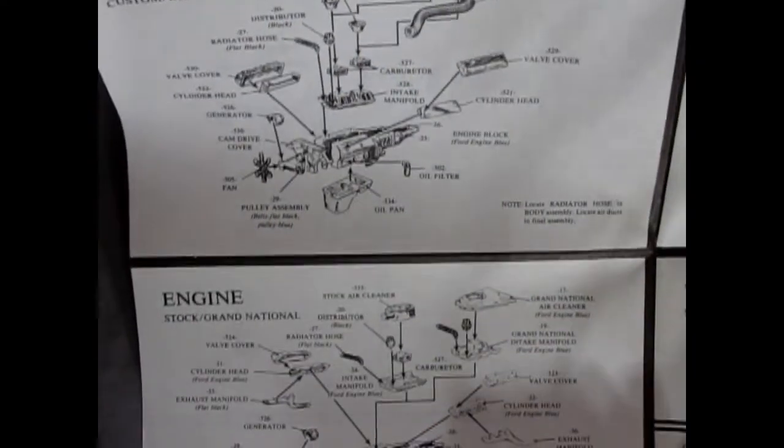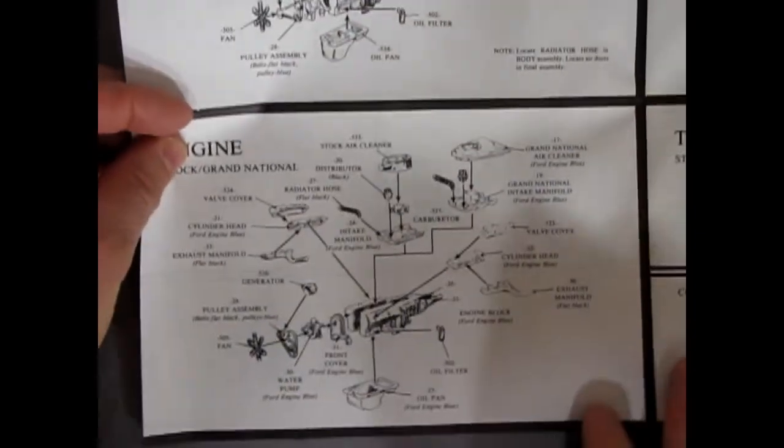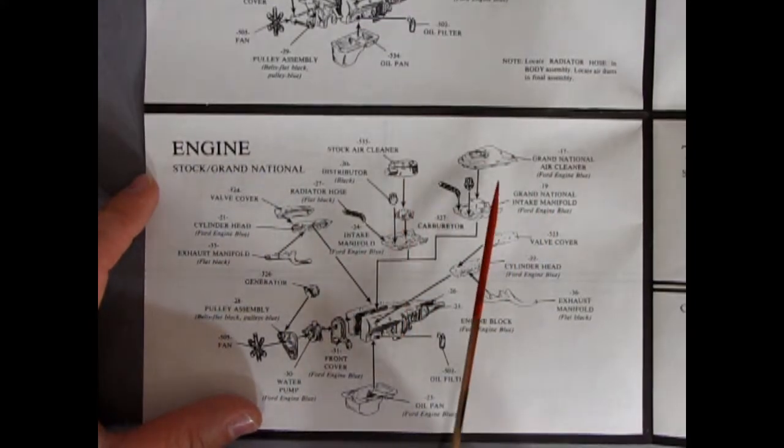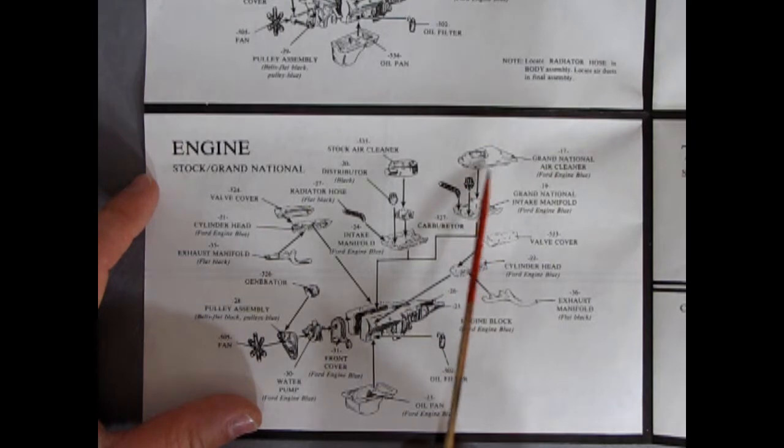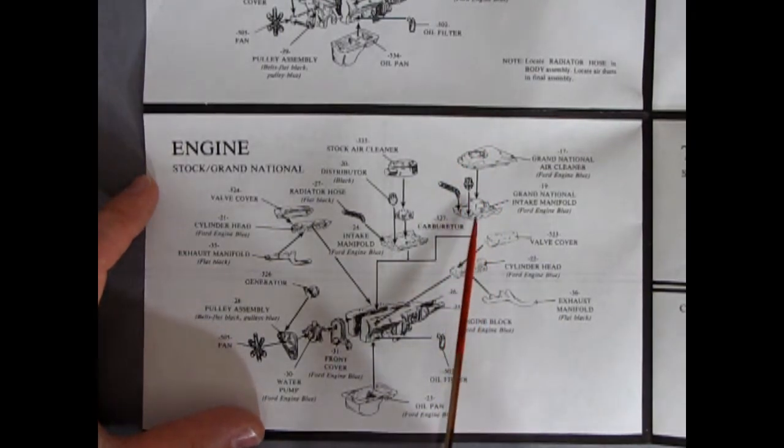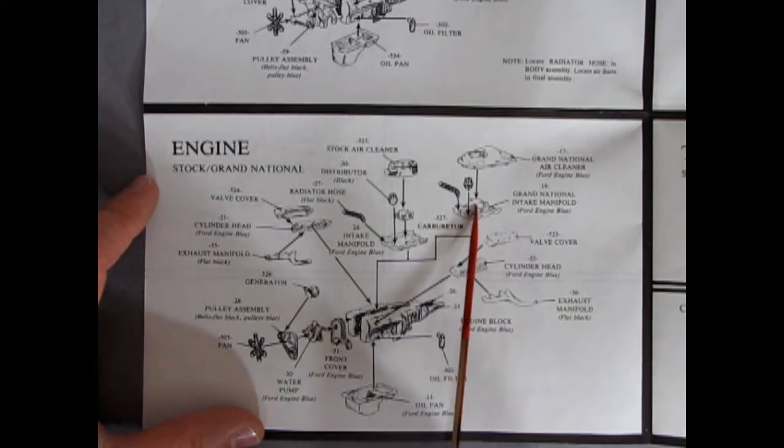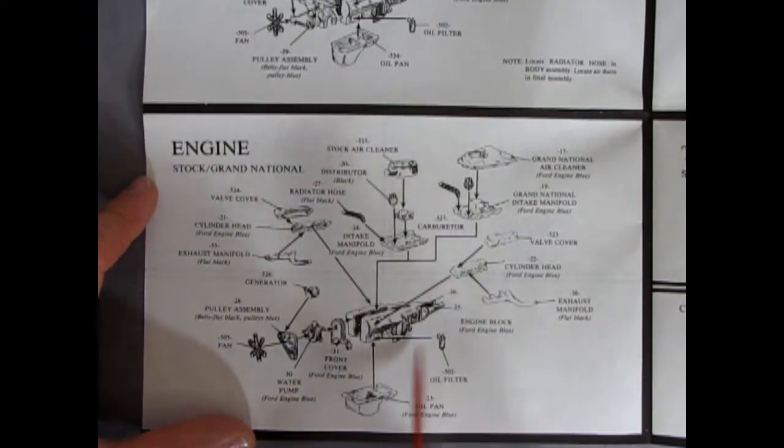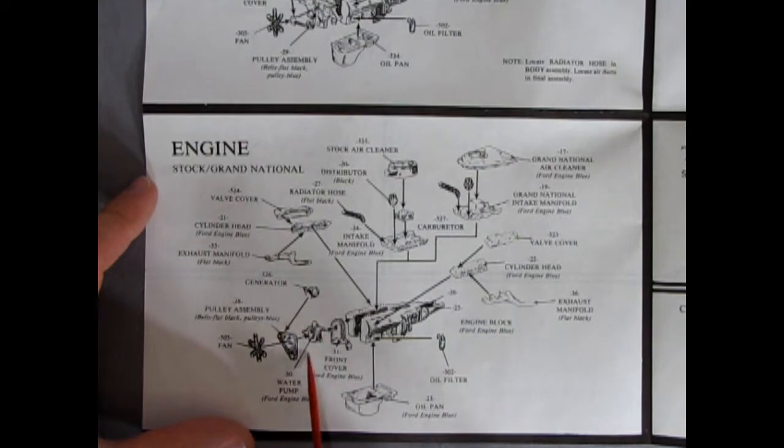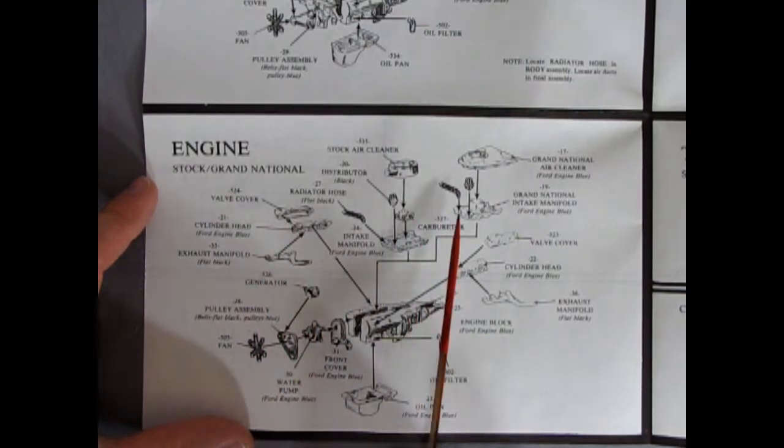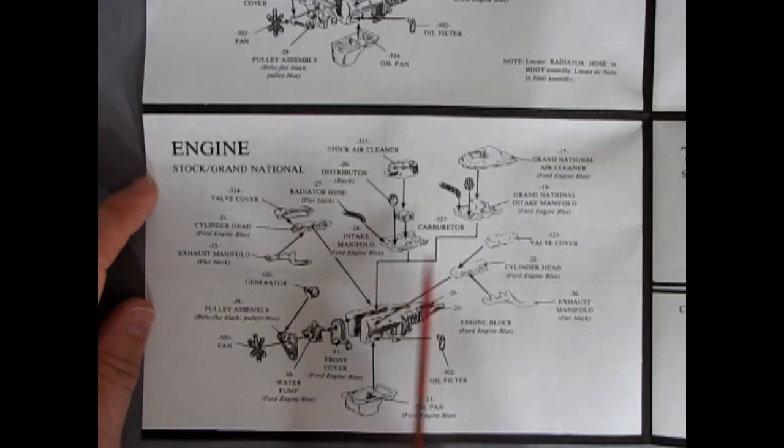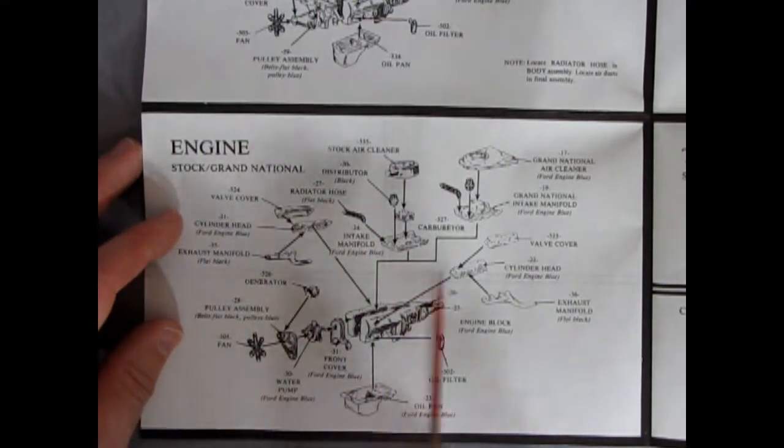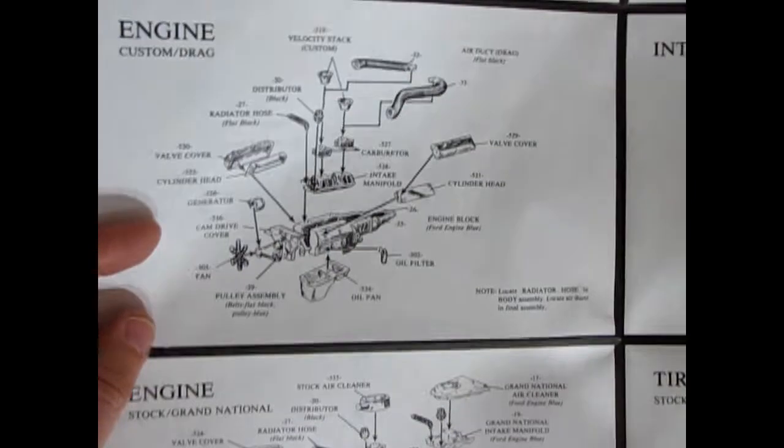That would be your drag racer. Here's your NASCAR and your stock. Stock Grand National, they call it. There's your air filter with the triangular back and high-rise intake manifold. That is supposed to be a carburetor but you don't see it because the air cleaner covers it. You could swap a bunch of stuff around and make a NASCAR version with the 428 by combining engine parts together.